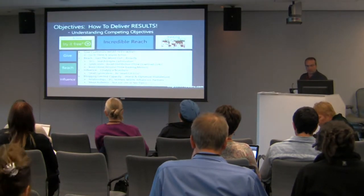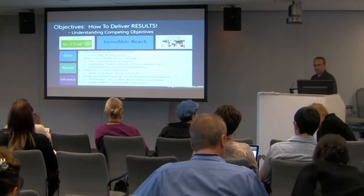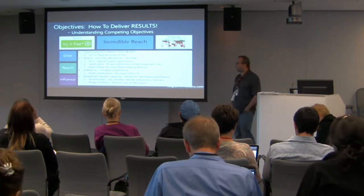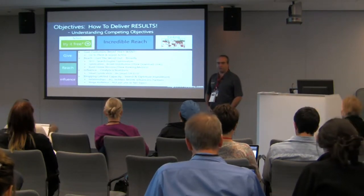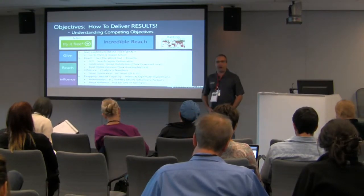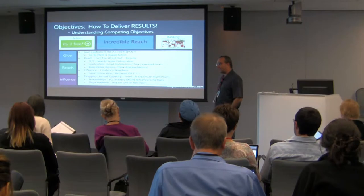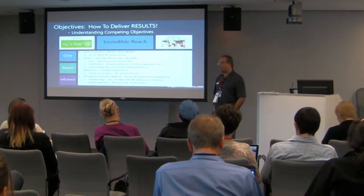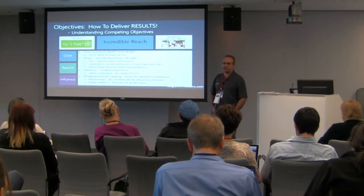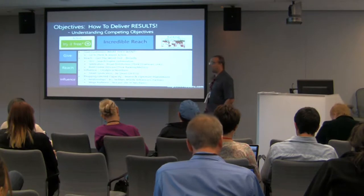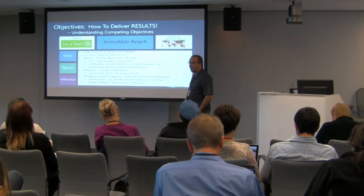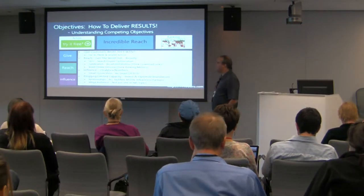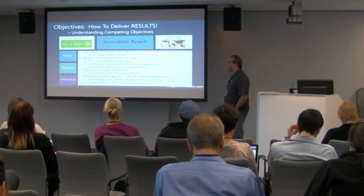One of the things you want to consider whenever you're talking about building incredible reach is how to deliver results and understand your competitive objectives. Before you write a blog post, you have to think: why am I doing this, and what do I want to achieve? If that's not your first step, you're never going to get the kind of results you want or exponentially increase your traffic. It doesn't take a lot of time — seconds, sometimes a minute. But it is a step that needs to be done. Number one is to give — give customers what they want.